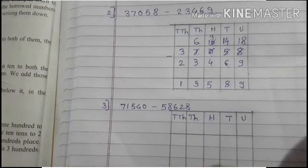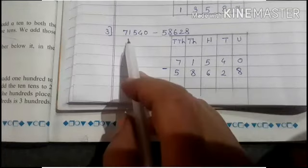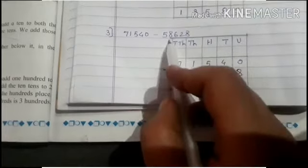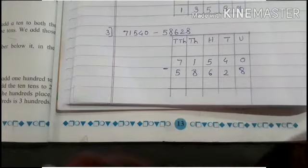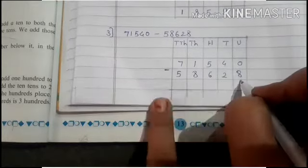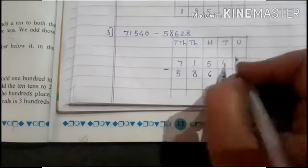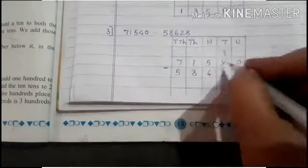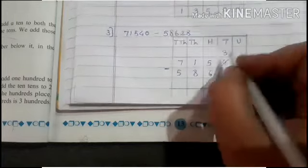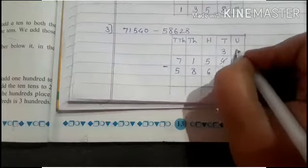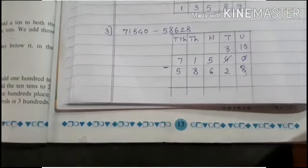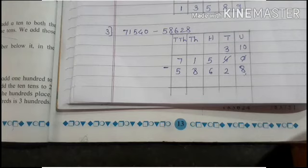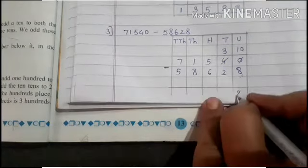Now see the third example: 71,540 minus 58,628. Here I make the columns and write the numbers. Start from unit place: 0 minus 8. Is 0 minus 8 possible? No. So we borrow 1 from 4 — this 4 converts into 3 and this 0 converts into 10. Now 10 minus 8: do 10 fingers and subtract 8, so the answer is 2.